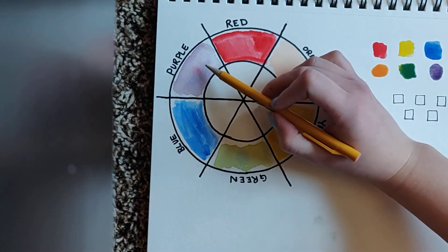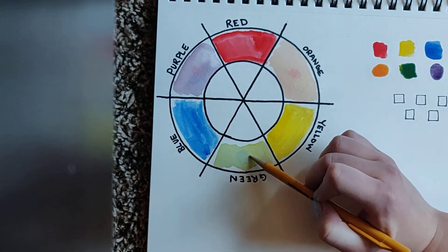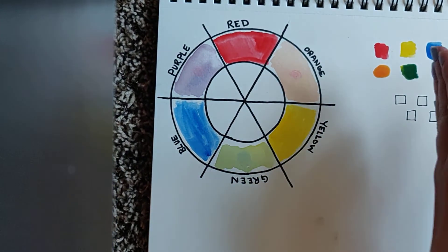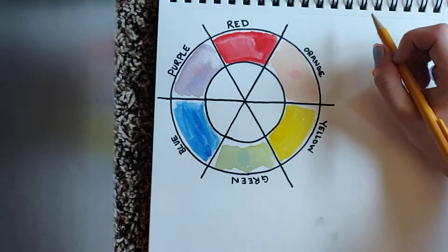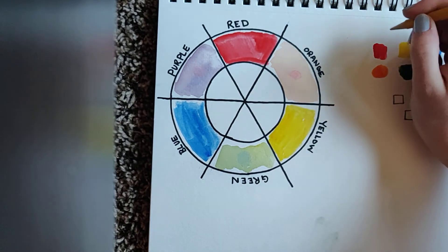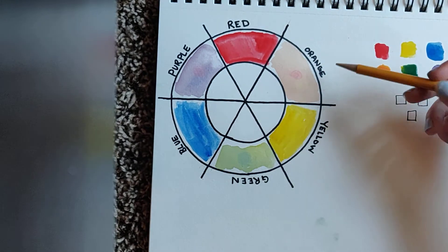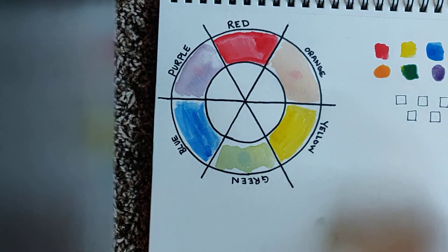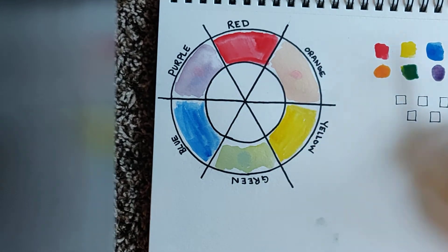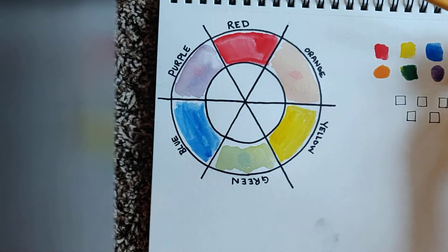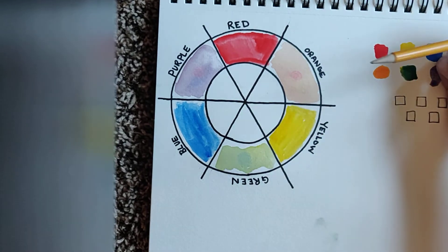These other colors that you get when you mix those three colors are called the secondary colors. That one's a really big word too, so I would clap that one out. And that means that they are the colors that we get when we mix our most important colors. So now I'm going to sing us a song to help us remember which colors are which. Ready?